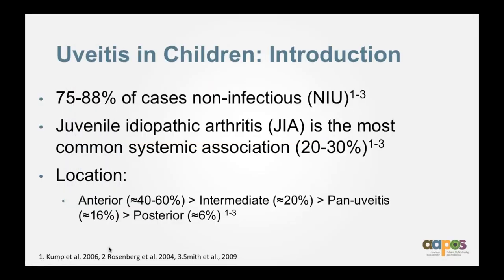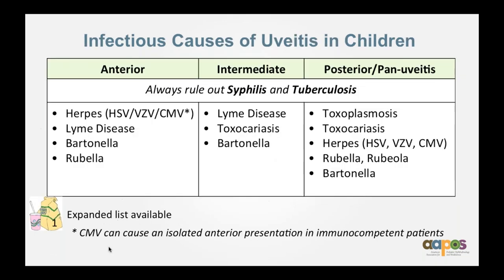Uveitis in children: most cases are not infectious. However, that leaves 10 to 15% that will be infectious, so infectious always needs to be in the differential diagnosis. By far, juvenile idiopathic arthritis (JIA) is the most common systemic association. In terms of location of involvement, anterior is predominant, followed by intermediate, panuveitis, and posterior uveitis. Infectious causes of uveitis are many — you always need to rule out syphilis and tuberculosis, as they can affect any part of the eye and can take on any appearance.